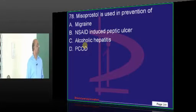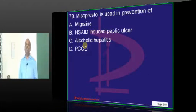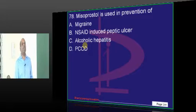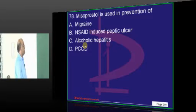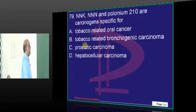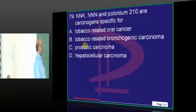Misoprostol — why do we use this prostaglandin analog? For NSAID-induced peptic ulcer. Easy question.